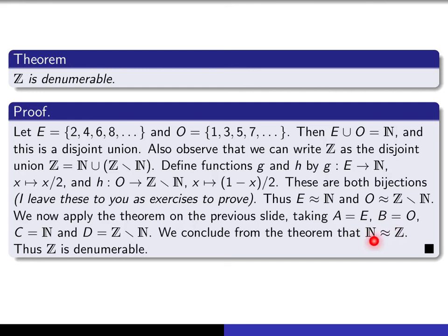Well, the fact that Z has the same cardinality as the natural numbers is what it means to say that Z is denumerable, and so that completes the proof. Thank you.